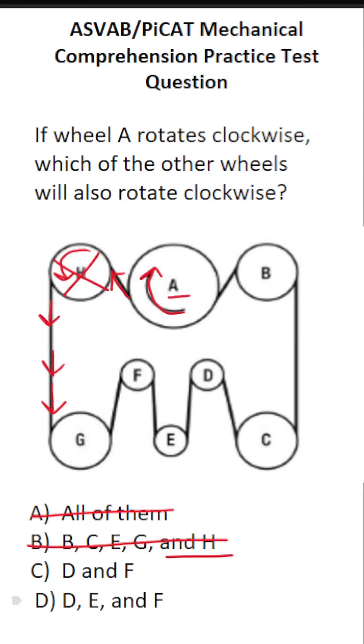So all we have to figure out is if D, E, and F spin clockwise like wheel A. Again, the belt is moving in this direction. We can see that it's going to spin wheel G that way.